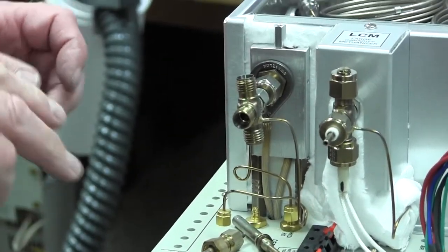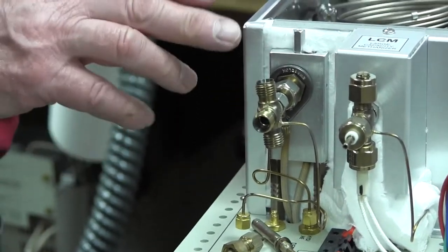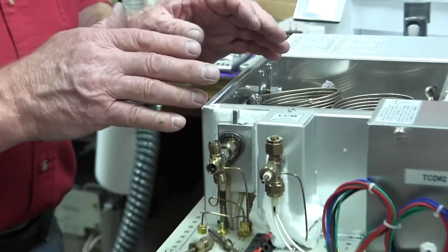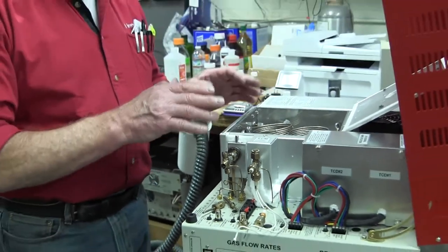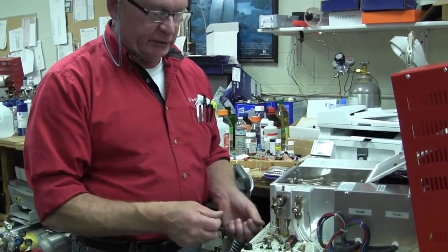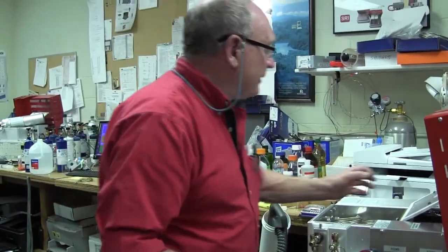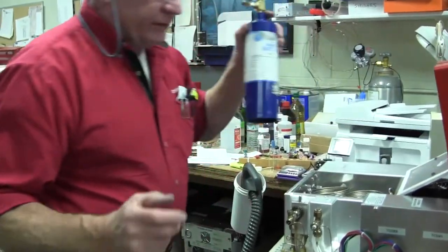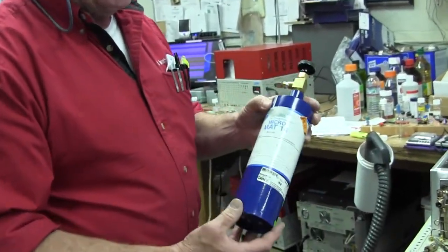You set that to 300 degrees, and if the methanizer is working perfectly, the carbon monoxide and carbon dioxide will give you the same size peak as a methane peak of the same concentration. Here we use a gas calibration standard that has 1% of methane, CO, and CO2.